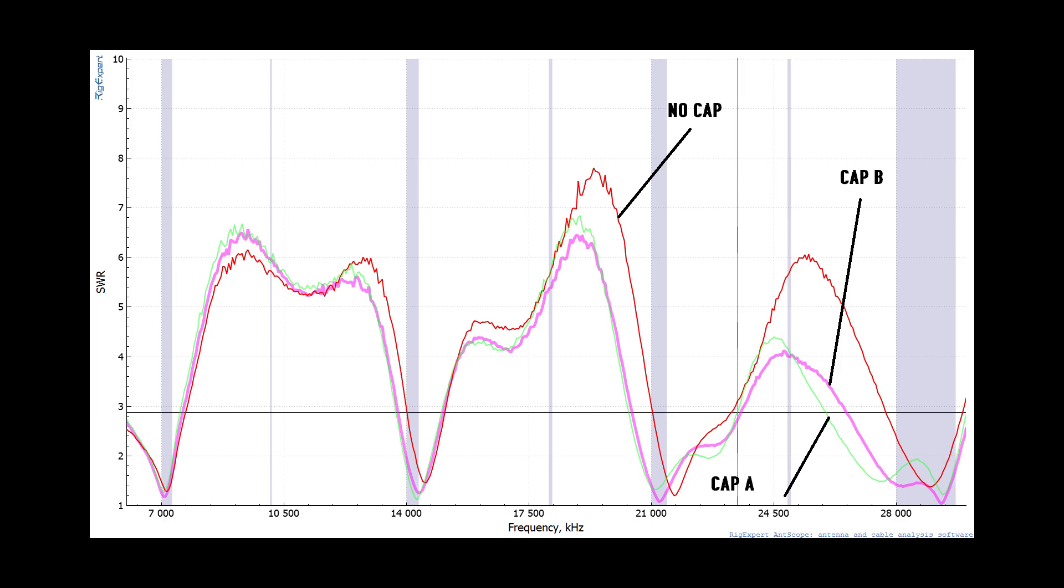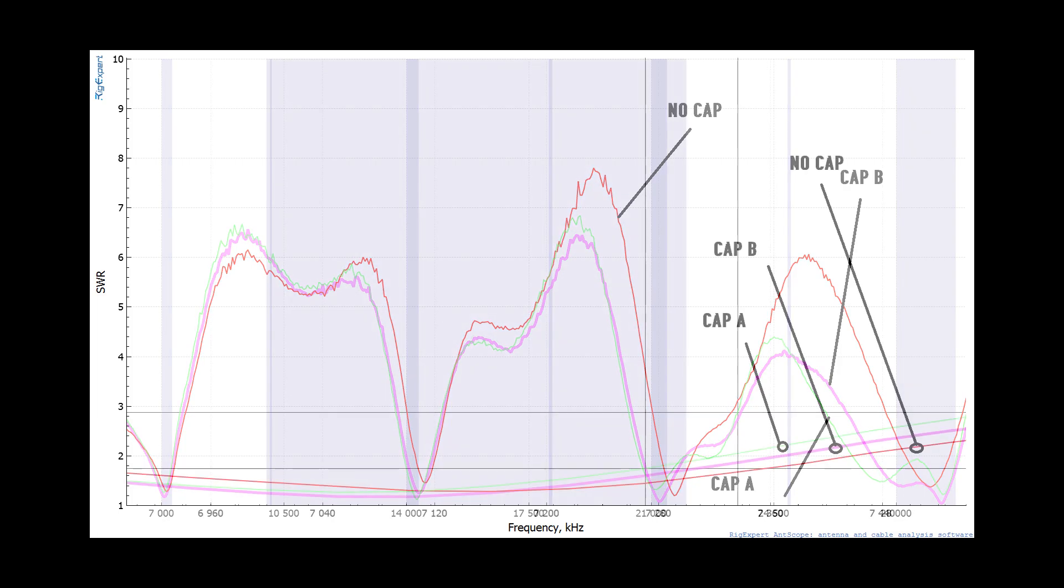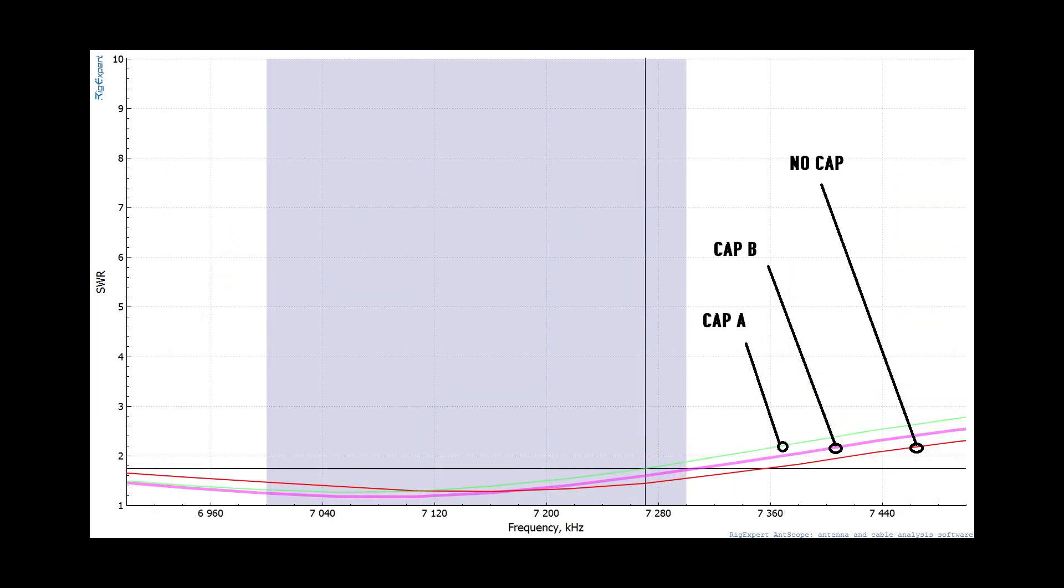We are zoomed in on the 40 meter band and you can see the performance across the 40 meter band is rather good, just about where we would want it to be. Again, this antenna element is cut for the phone portion of the band and looks like all is bueno.